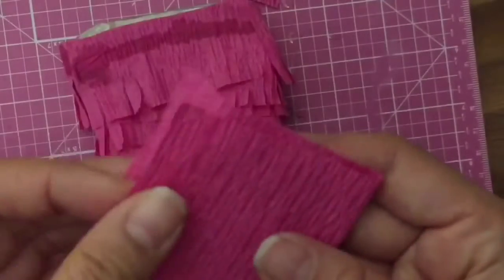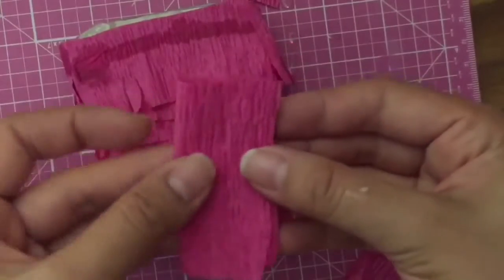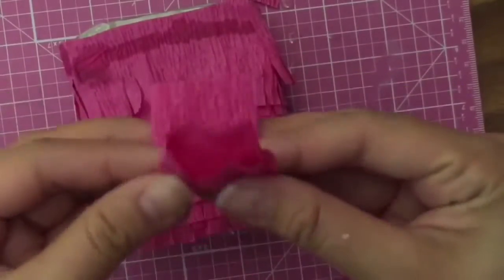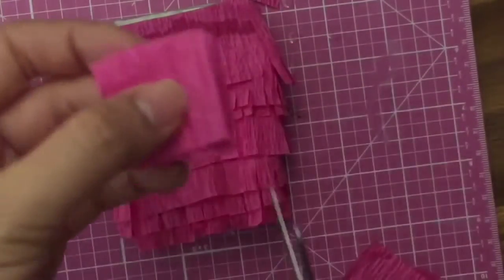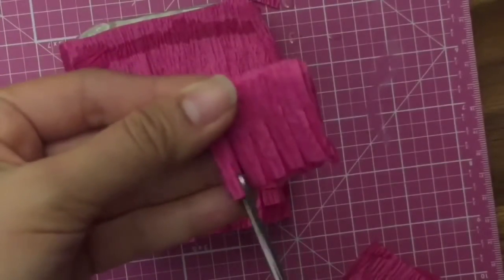I'm going to take a piece of crepe paper that's around three times the width of my pinata and one and a half times the length. I'm going to fold the paper lengthwise twice and then fold over the paper widthwise once and cut fringe on both sides and glue it to the top.